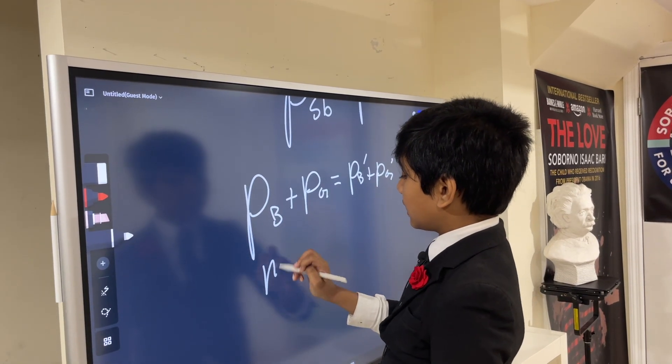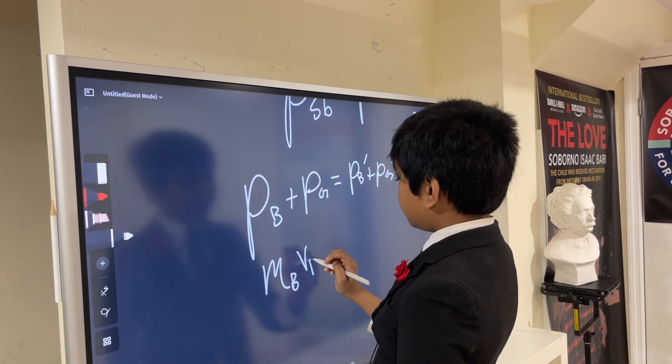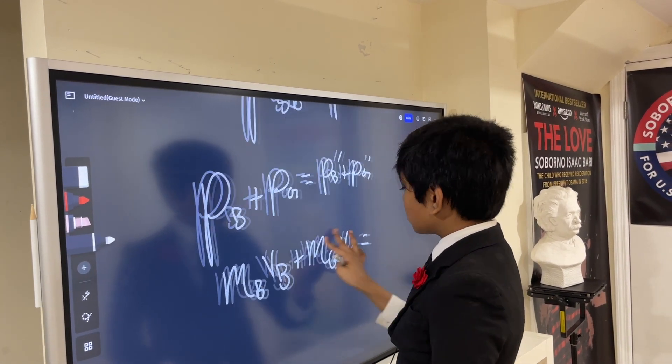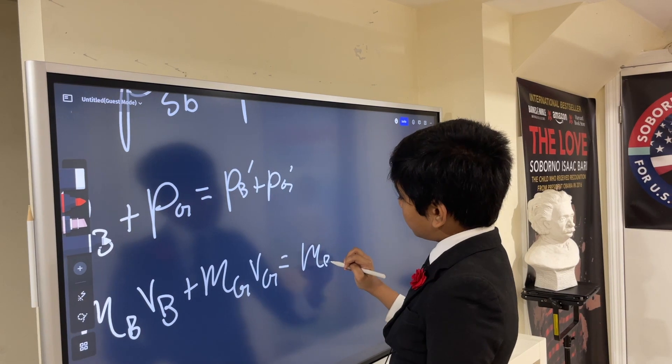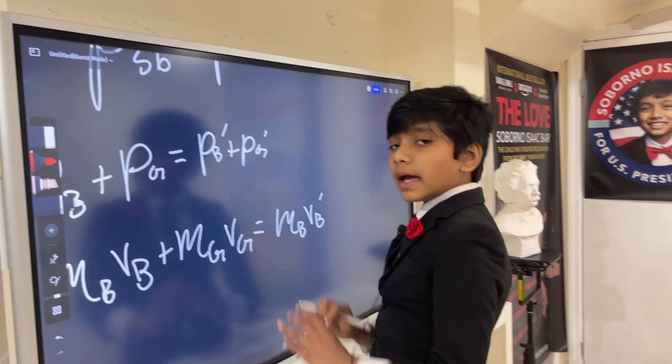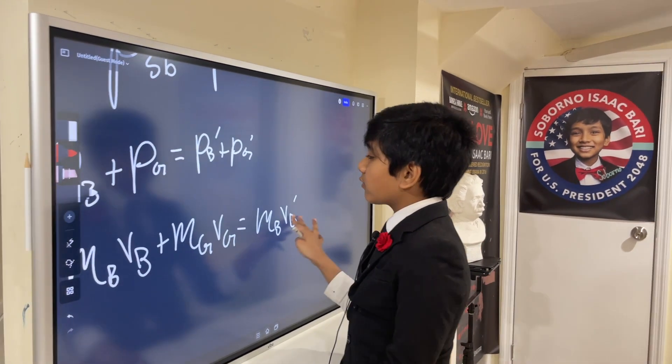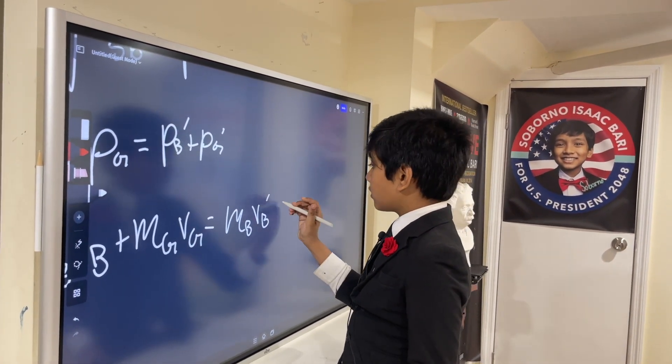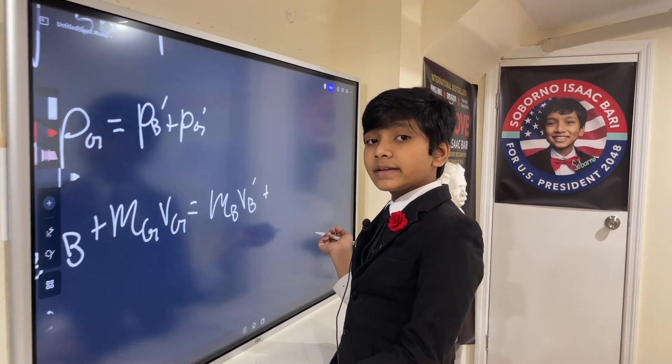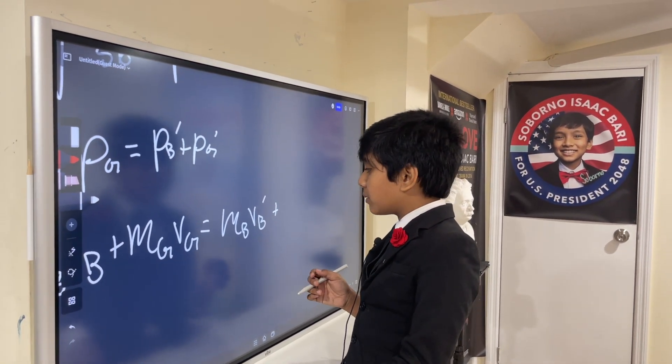Okay. MBVB plus MGVG is equal to MBVB prime. We don't need to put a prime on the MB because M does not change before and after. And then, the prime, by the way, represents the quantity after the collision has taken place.